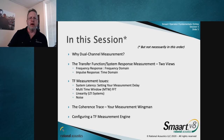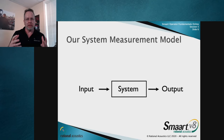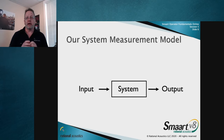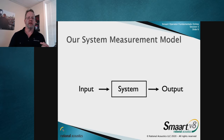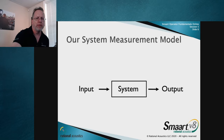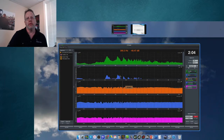Our basic measurement model: we put a signal into a system and get a signal out. That system can be anything — a piece of wire, a DSP device, or a complex multi-channel system in a chaotic acoustic environment. We put a signal in and get a signal out. In electroacoustic measurement, the output is monitored at a microphone.